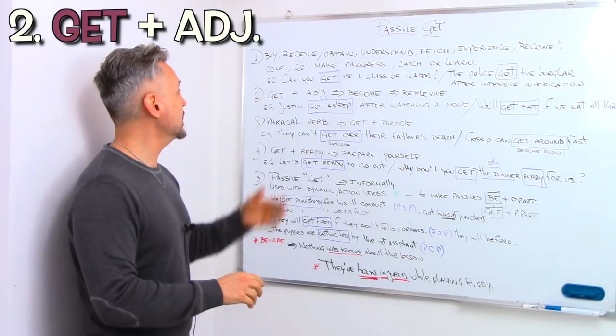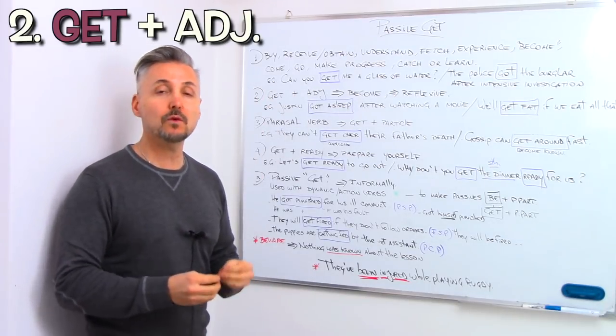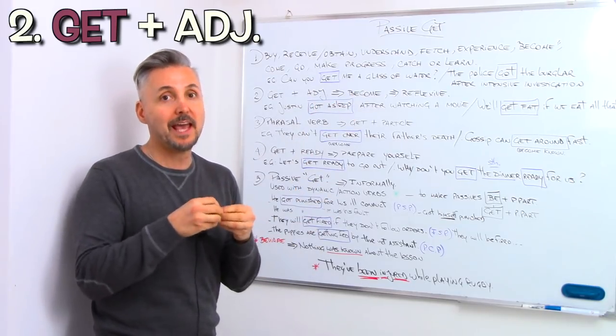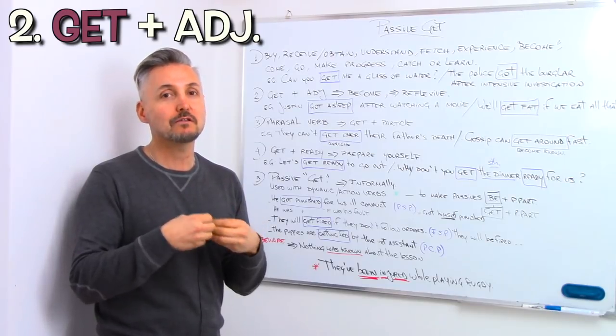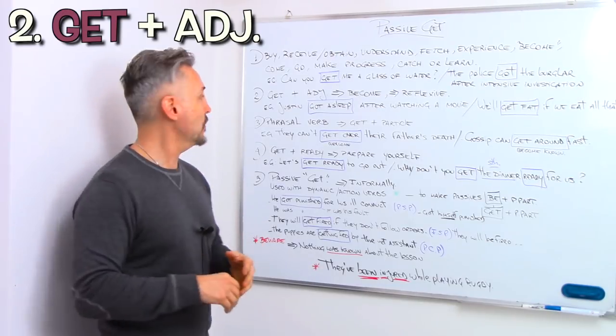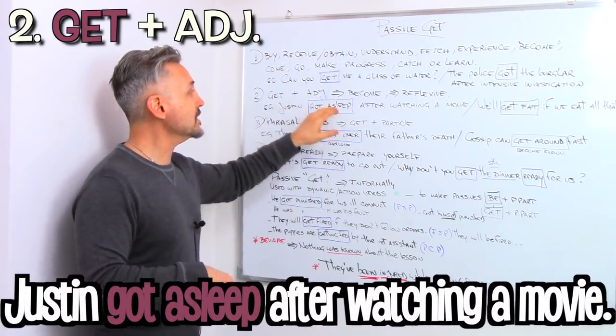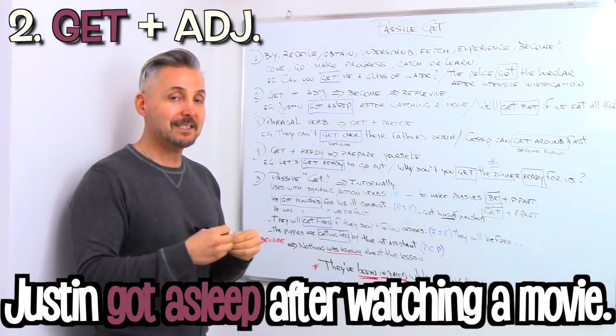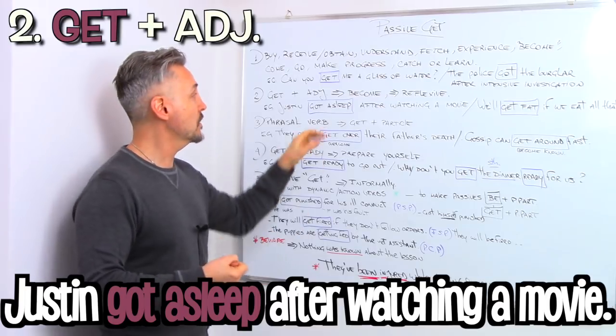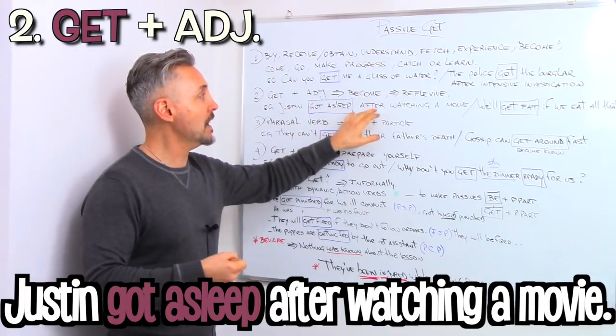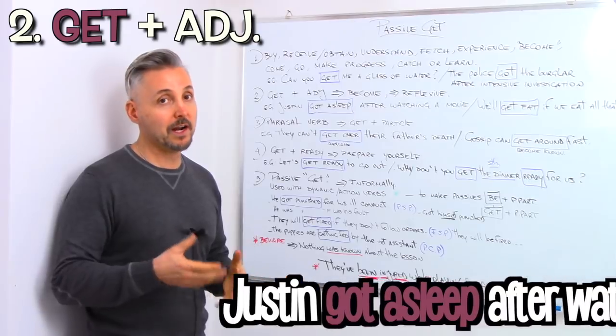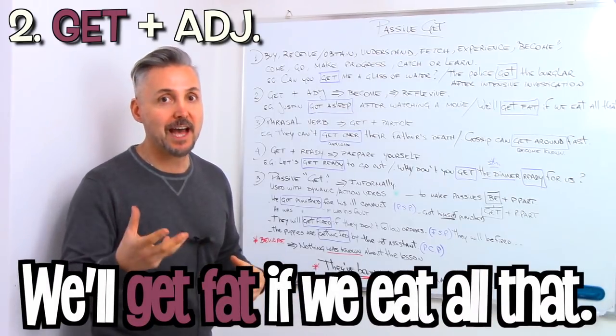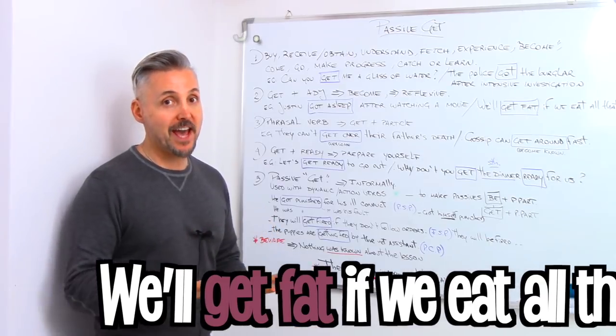The second point is GET plus adjective. If you add an adjective after GET it means become, and thus it becomes reflexive. So for example, Justin got asleep after watching a movie. So get asleep, so become asleep. Or another example, we'll get fat if we eat all that. So become fat.